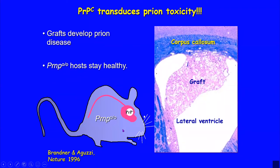In an experiment we did 25 years ago with Sebastian Brandner, my first postdoc in Zurich, we introduced a graft of cells overexpressing the prion protein into a PRP knockout mouse. We discovered that when we infected these pseudochimeric mice with prions, prion pathology visible by vacuolation extended within the graft but did not extend beyond it. This indicated that prions necessitate the normal prion protein on the surface of neurons to exert their damage — meaning the prion protein is not only the substrate for conversion but also required for transducing prion toxicity.